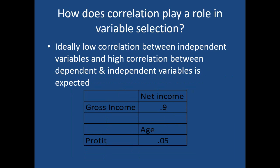The next question is: how does correlation play a role in variable selection? Ideally, low correlation between independent variables is expected, and you always expect high correlation between dependent and independent variables. If there is high correlation between the dependent variable and an independent variable, that is good because you want the independent variable to explain the dependent variable. But between two independent variables, there should be less correlation — if they are highly correlated, they will be redundant; you are using the same information again and again.